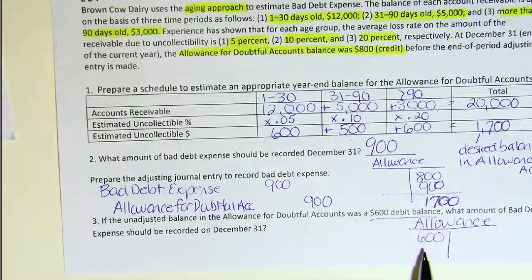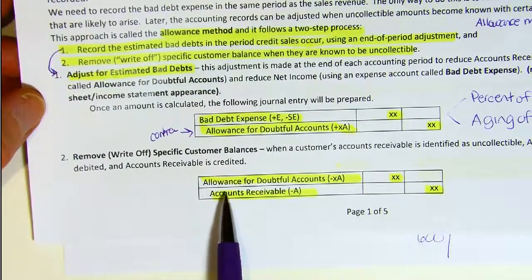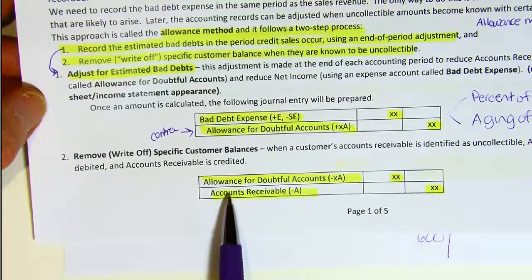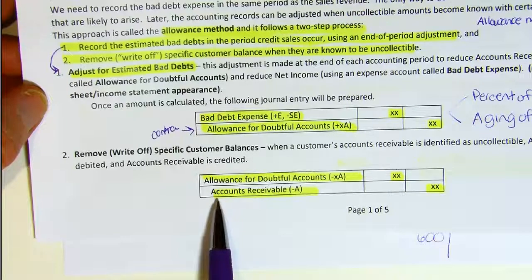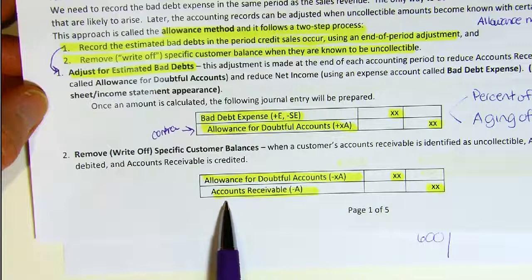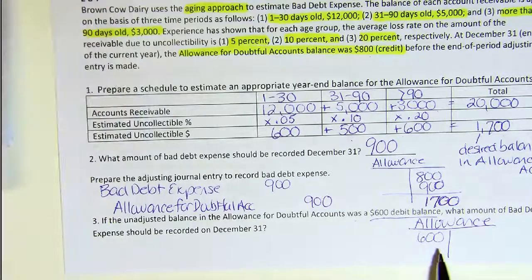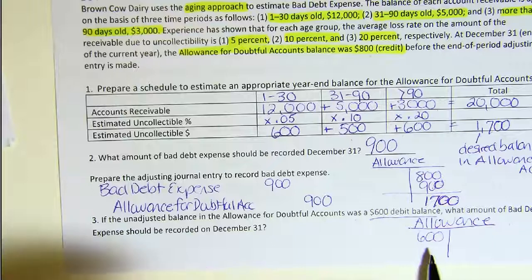Why would the allowance account have a debit balance? We debit the allowance account when we do write-offs — when we take a particular customer's account off our books because we've identified it as uncollectible. We've tried and tried and cannot collect it, so we're giving up. If that allowance account is now in a debit position, it means we've written off so many bad debts that the account has flipped — we must not have put enough into that account in a prior period.